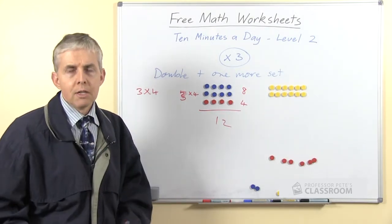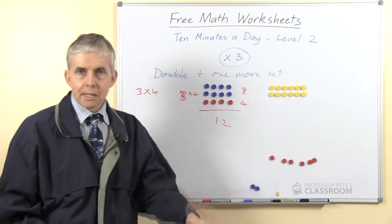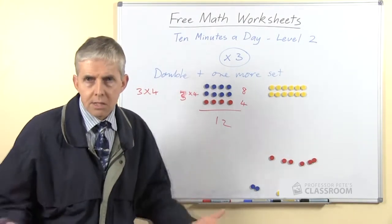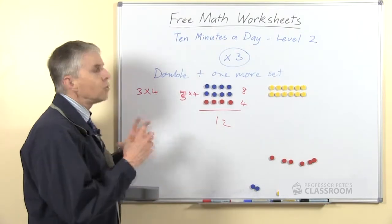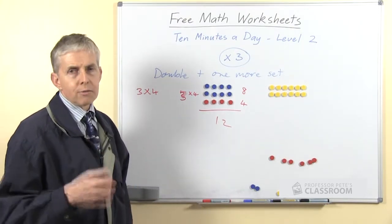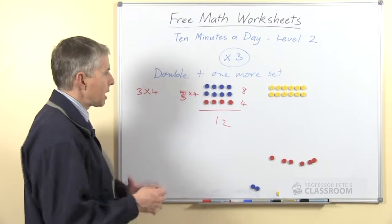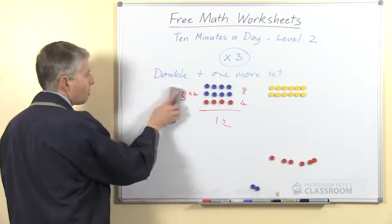It does involve some tricky additions. So if you did 3 times 7, that would be 14 plus 7, which, as I said, is a bit tricky. But it's quite a good way to get to the 3 times multiplication facts if you don't remember what they are.